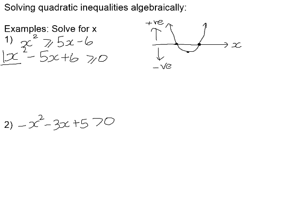The x-intercepts are where the parabola equals zero, so we factorize if possible. This one does factorize: the factors of positive 6 that add up to negative 5 are negative 3 and negative 2. Therefore our critical values will be positive 2 and positive 3 — this intercept is positive 2 and this intercept is positive 3.